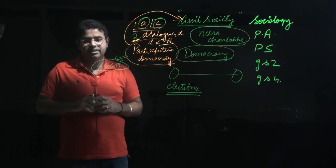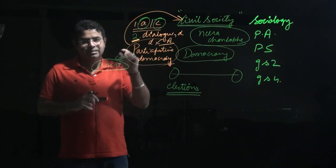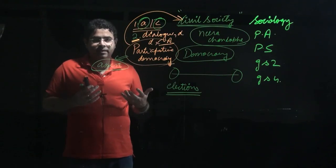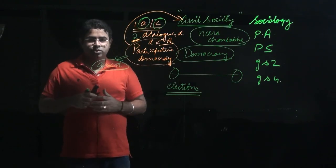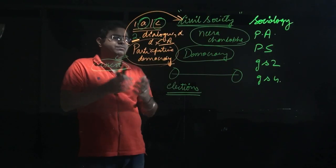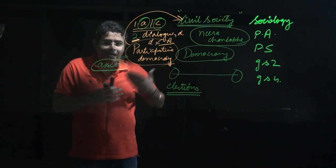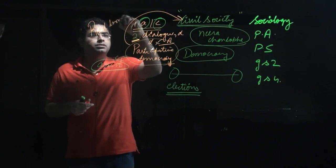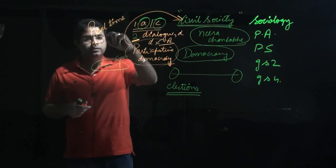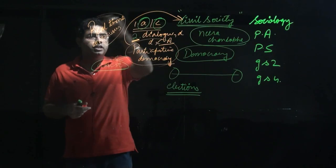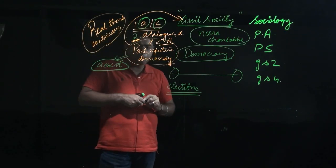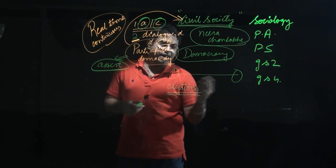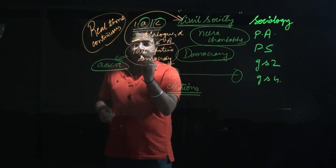Civil society asks the government to consider alternatives. Civil society is a mechanism by which people really participate on a real-time basis. This continuity of real-time participation is very important when it comes to making democracy accountable.